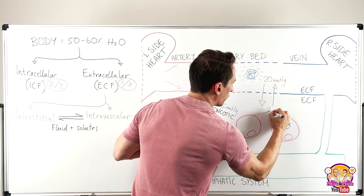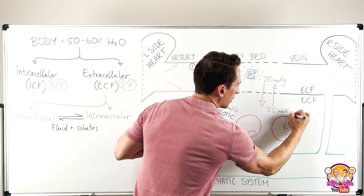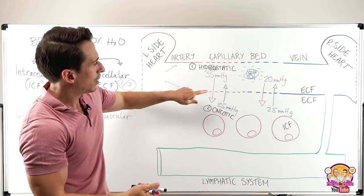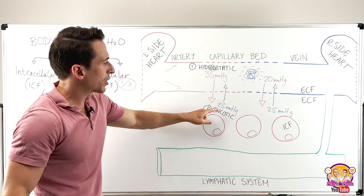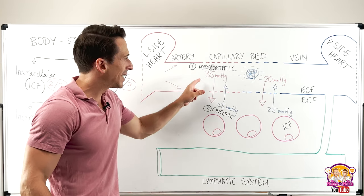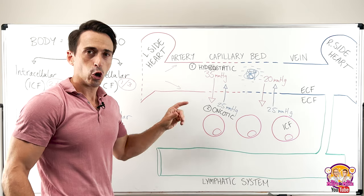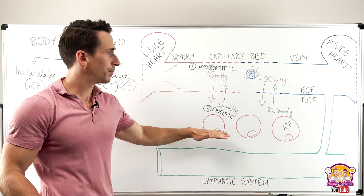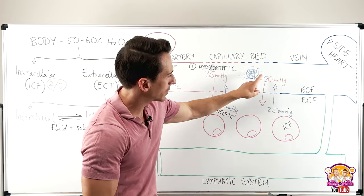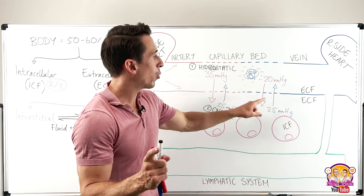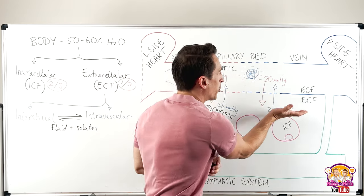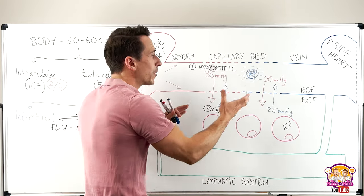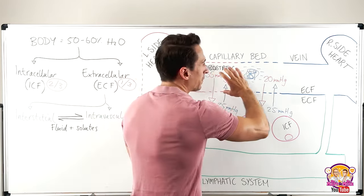Let's compare: on the arterial end you've got 35 pushing out and 25 pulling in — a difference of 10 mmHg — so the hydrostatic pressure wins and fluid gets pushed out. On the venous end the difference is 5 mmHg, but the inward pull wins, so stuff gets pulled back in. Stuff comes out on the arterial side and goes in on the venous side — that's how we maintain our intravascular fluid volume, delivering oxygen and nutrients on one side and taking away carbon dioxide and wastes on the other.